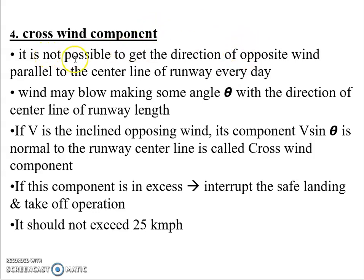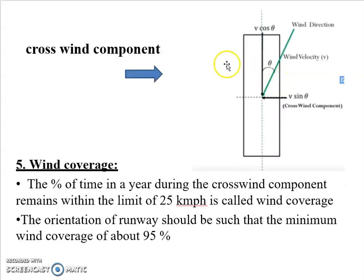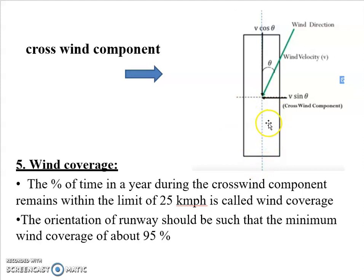The crosswind is a wind that is not possible to get in the direction of an opposite beam parallel to the central line of the runway every day. The next type is the tailwind. The crosswind means the wind comes from the side — it is a sidewind. The front portion of the aircraft is the nose; headwind hits the nose from the front, while tailwind comes from behind, parallel to the aircraft.